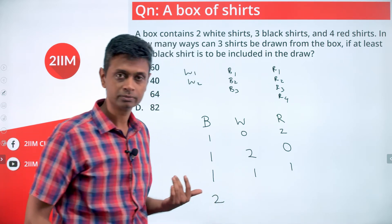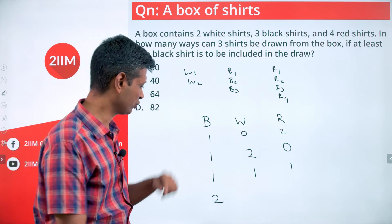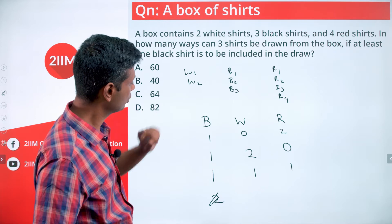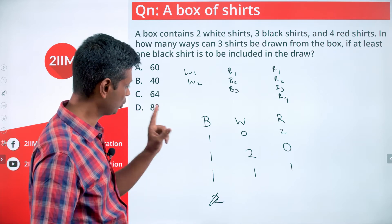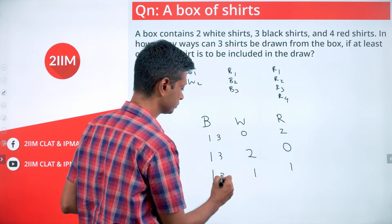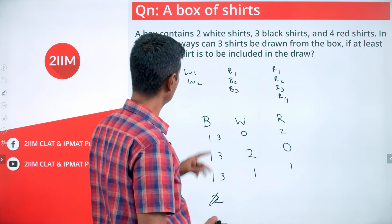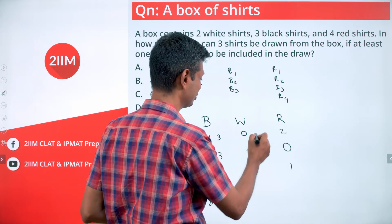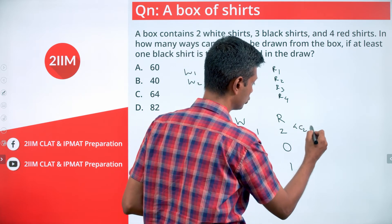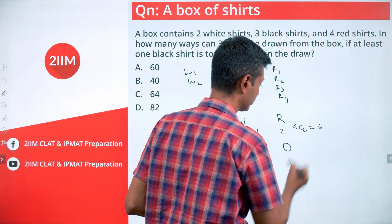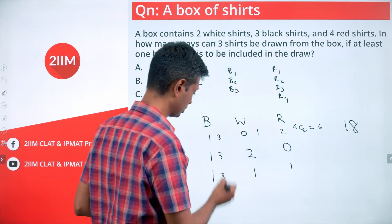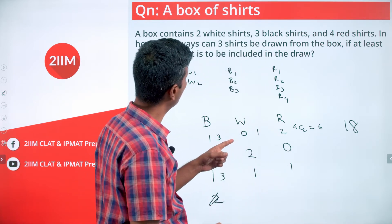Let me compute Case 1 first. Out of three black shirts we select one — this can be done in 3 ways. Out of two white shirts we select nothing, so there's only one way. Out of four red shirts we select two: 4C2 = 6. So three into six gives eighteen ways for this sub-case.